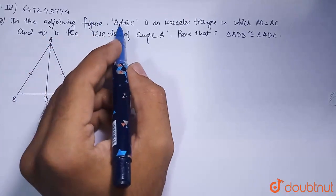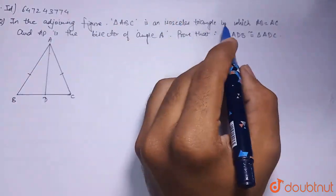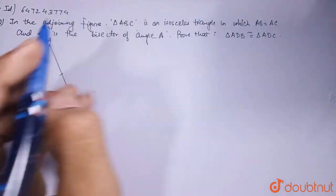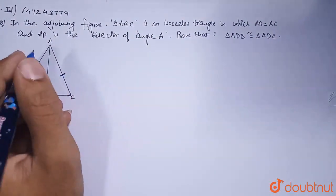Question says, in the adjoining figure, triangle ABC is an isosceles triangle in which AB equals AC. AB equals AC, we have given as the first thing,